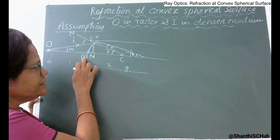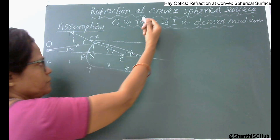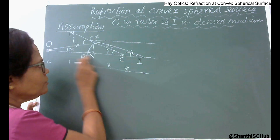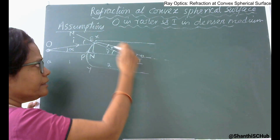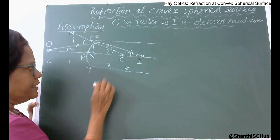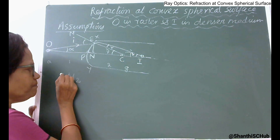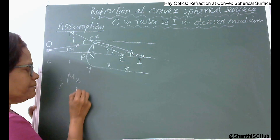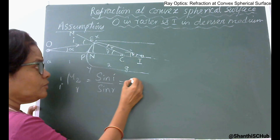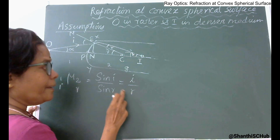Since the surface has a small aperture, P and N are considered very closely located points, so distance measured from N equals distance from P. Now using Snell's law: the refractive index of the second medium with respect to the first medium equals sin i / sin r, which also equals i / r because sin i ≈ i and sin r ≈ r for small angles.